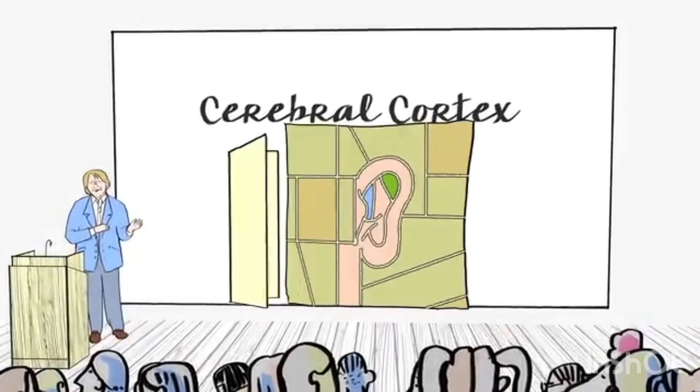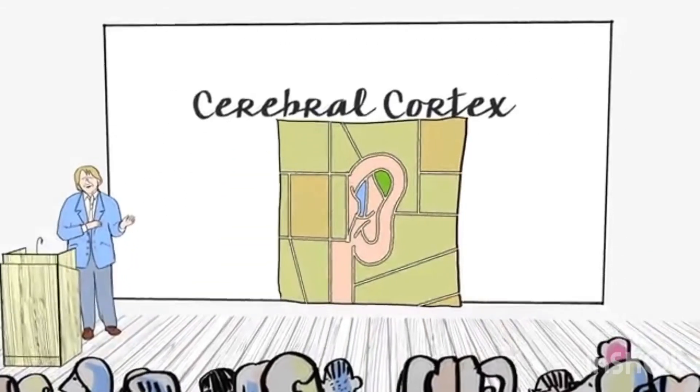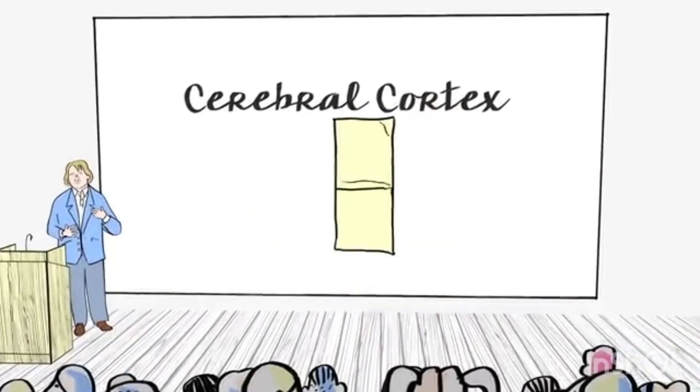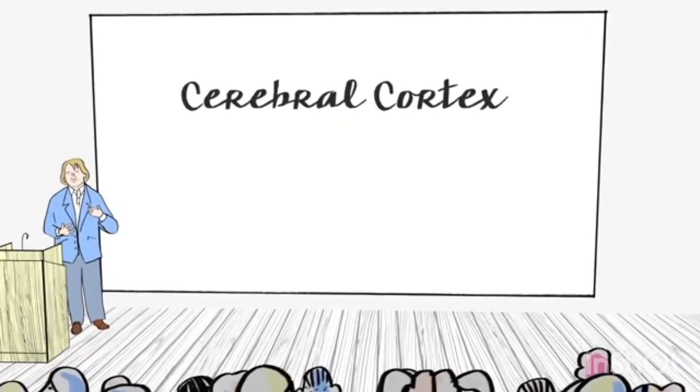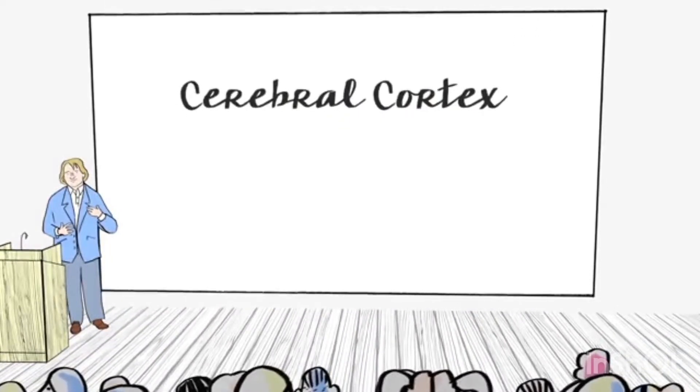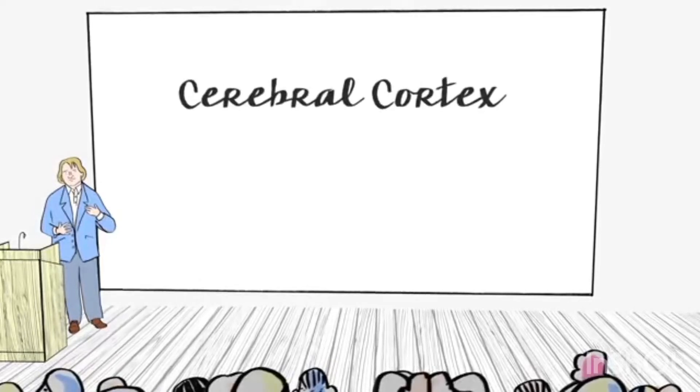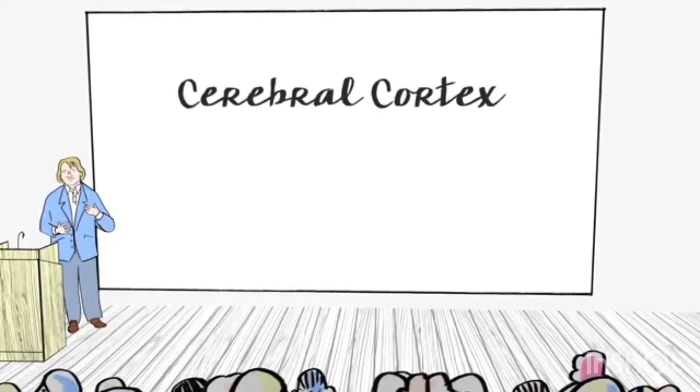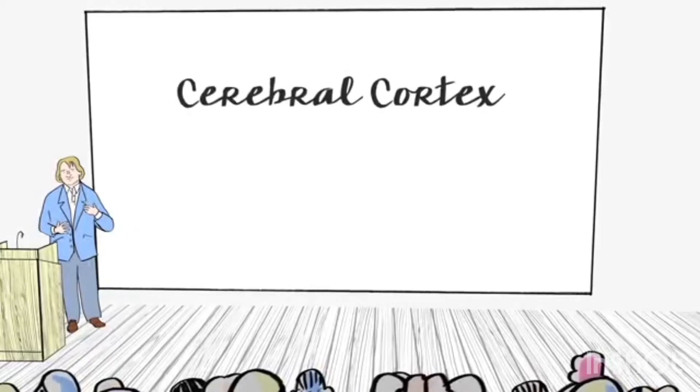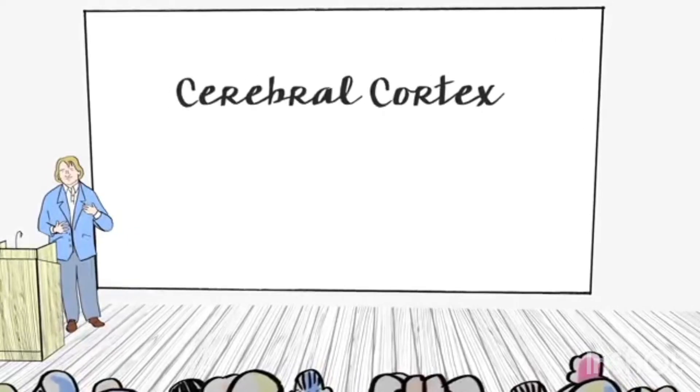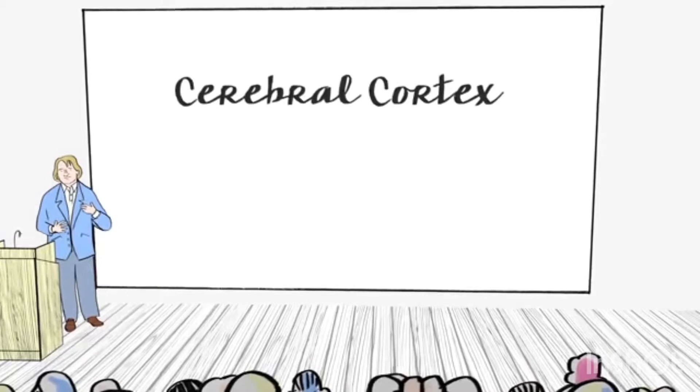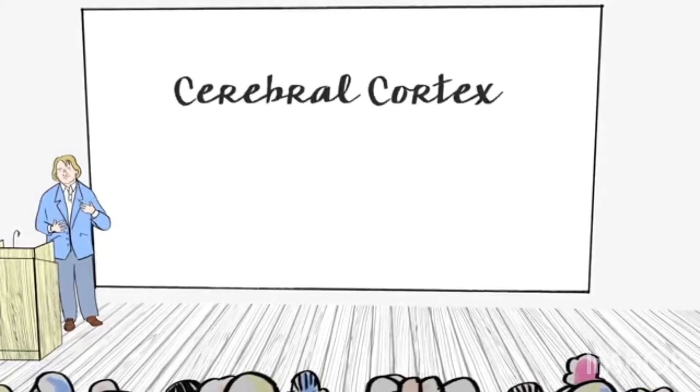Part of the cortex is those projection areas, but less than a quarter of the cortex contains projection areas. The rest is involved with the cool stuff, with language, with reasoning, with moral thought, and so on.